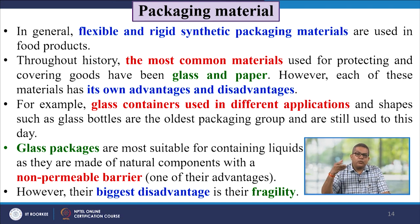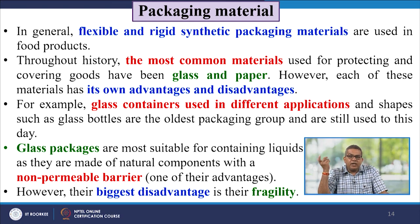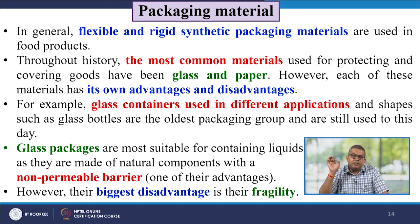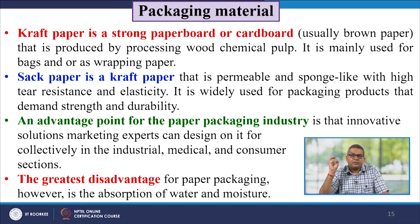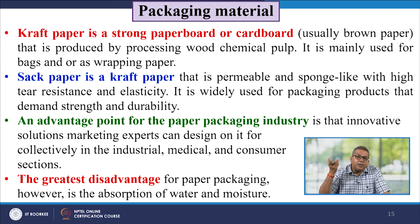Each material has its own advantages and disadvantages. Glass containers, used in different applications such as glass bottles, are the oldest packaging group and are still used in various ways. Glass packagers are most suitable for containing liquids as they are made of a natural component with a non-permeable barrier. However, the biggest disadvantage is that they are very fragile in nature.